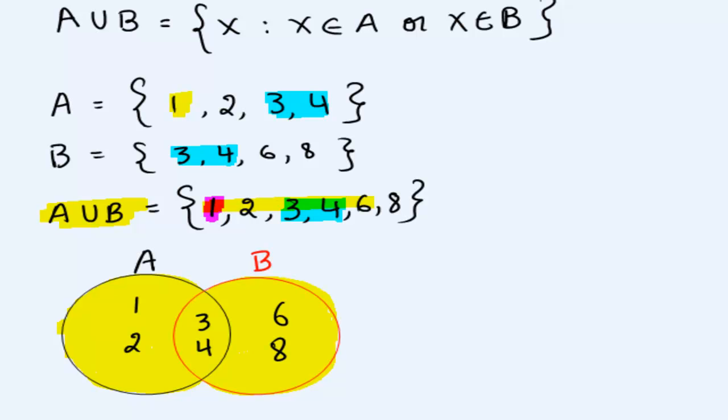Well, what are the numbers or elements you see in the yellow area? 1, 2, 3, 4, 6, and 8. And that was our union.